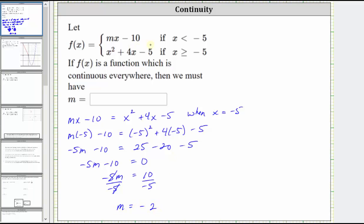So the slope of the linear function rule must be negative two, or m must equal negative two if the function is continuous everywhere.